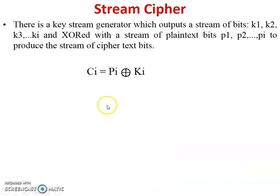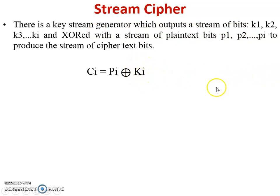Now, how do we represent stream cipher mathematically? There is a key stream generator which outputs a stream of bits. The key bits are denoted as ki, where i = 1, 2, 3, 4 up to n, and the plain text bits are denoted as pi, where i = 1, 2, 3 up to n. XOR of the plain text bit P and key bit K generates the cipher text bit C.